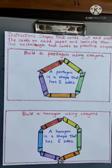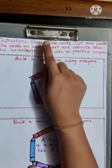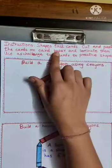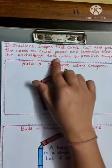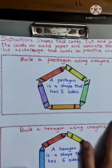Today we are going to do an activity on page number 63. Instructions: shapes task cards. Cut and paste the cards on card paper and laminate them. Use as challenge task cards to practice shapes. Now what we have to do is...